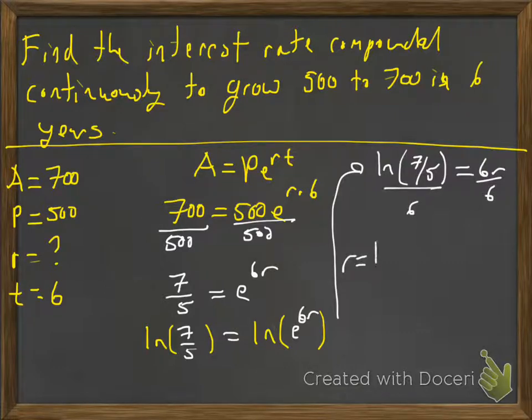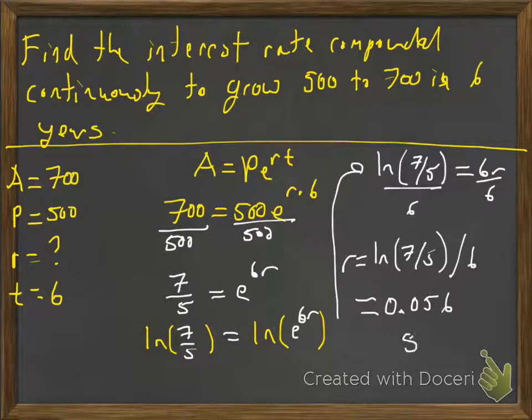Okay, so r is equal to ln of seven-fifths with parentheses in the log divided by six, and that is approximately 0.056 or about 5.6 percent interest. That's the interest rate we would need.